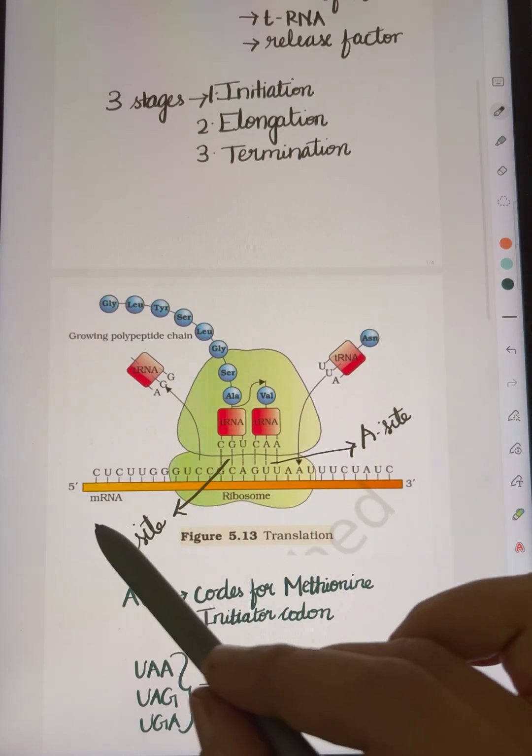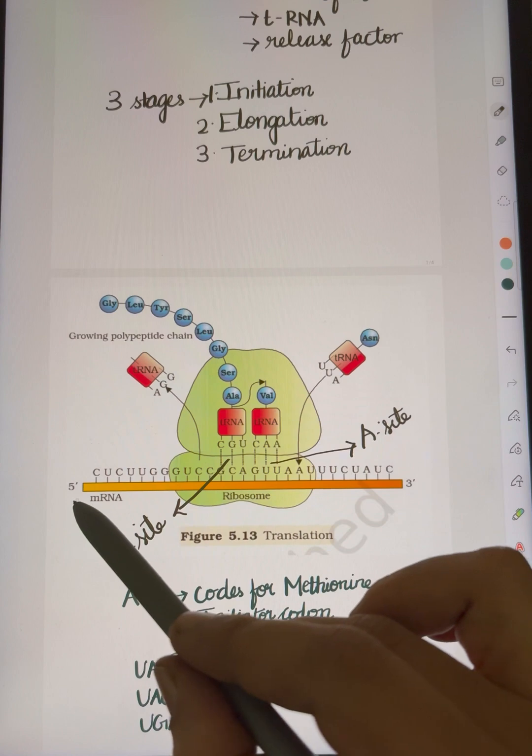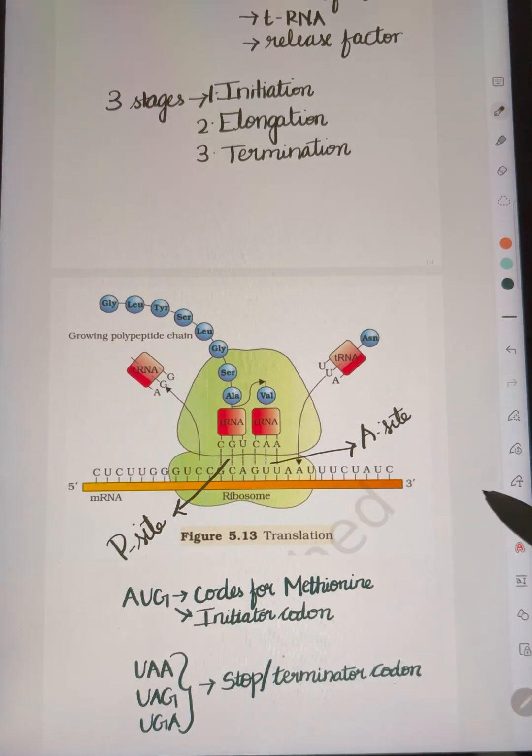This is the mRNA template which contains 5-methylated cap and 3-poly-A tail. These are post-transcriptional events in eukaryotes.